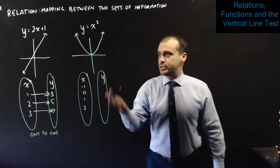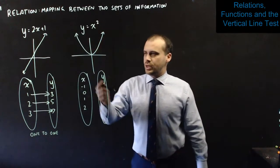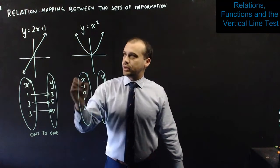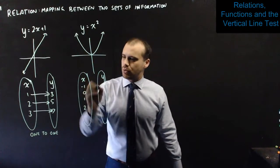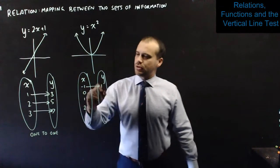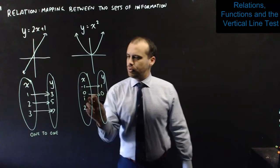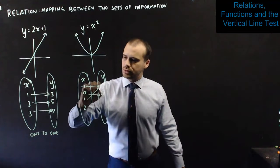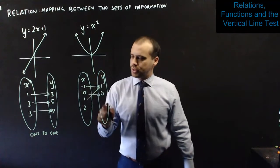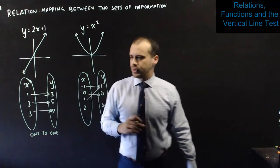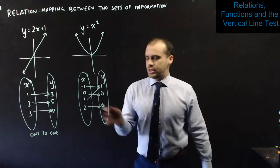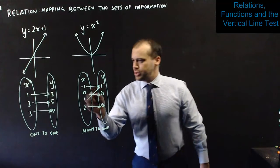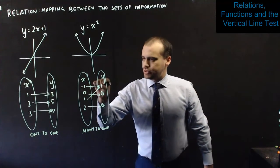You should also be familiar with this relation, y equals x squared. If I map this, what does it look like? Well, if I put negative 1 in, I get negative 1 squared, which is 1. If I put 0 in, I get 0. If I put 1 in, what happens? 1 squared is 1. And if I put 2 in, I get 4. Now, this is a little bit different. It's called a many-to-one relation, because there are many x values that come